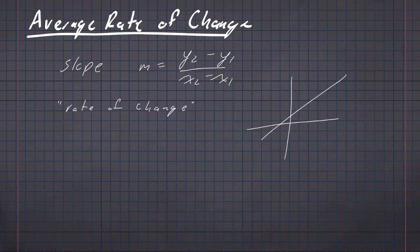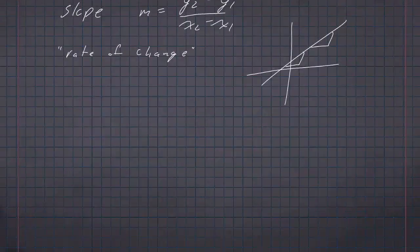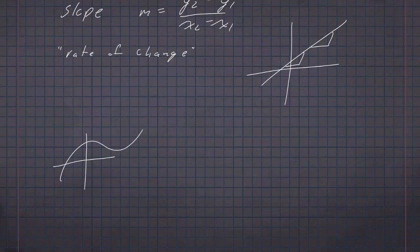No matter where on the line you look, the rate at which the function is changing is constant. If we look at an arbitrary curve, it might still be interesting to think about how the curve is changing over some period of time. There are a couple of ways to do that. The easiest one is using a tool called a secant line.